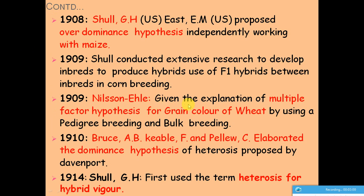Nilsson-Ehle provided an explanation with the multiple factor hypothesis for the green color of wheat, confirmed by experiment using pedigree breeding and bulk breeding methods. This was a very important factor — the multiple factor hypothesis — which means that the color of grain in wheat is not governed by any single factor but by multiple factors.